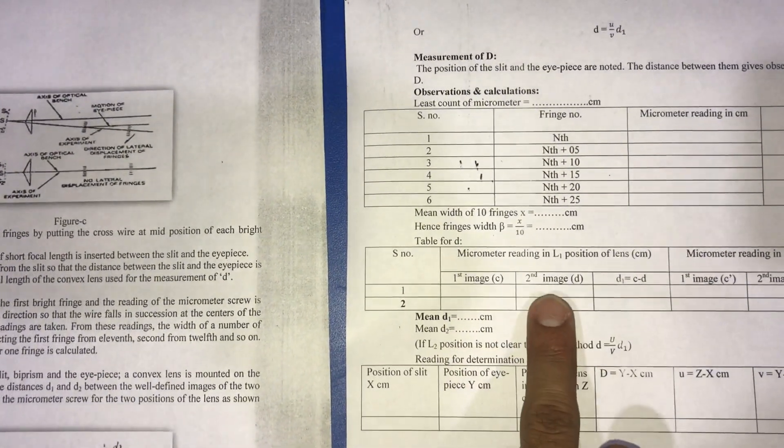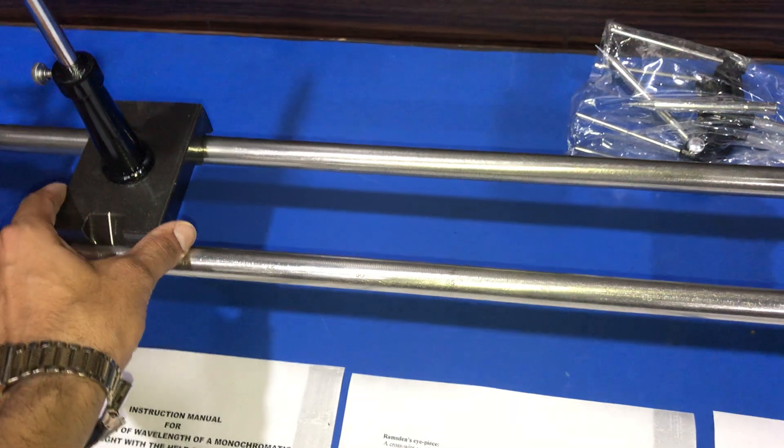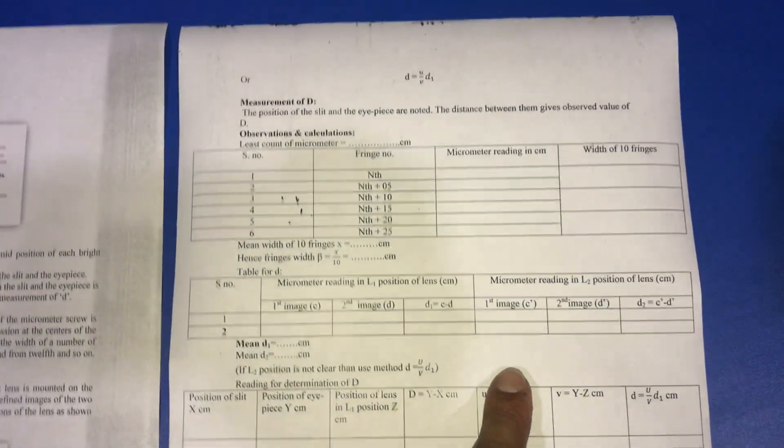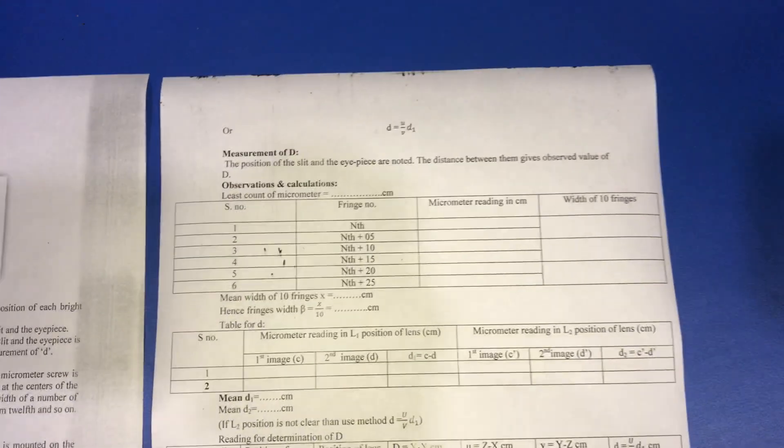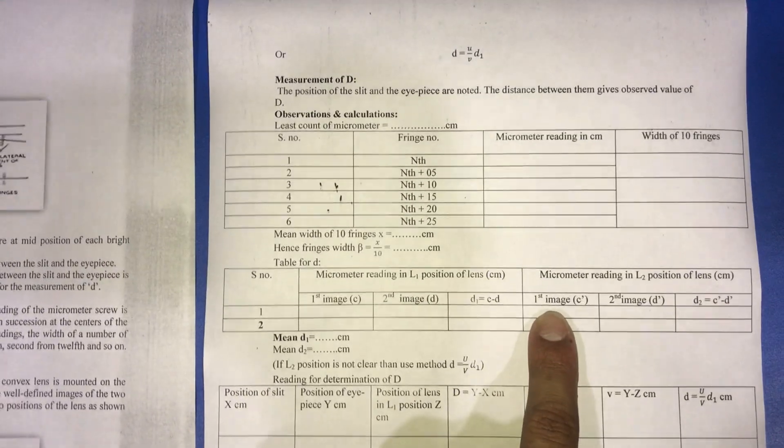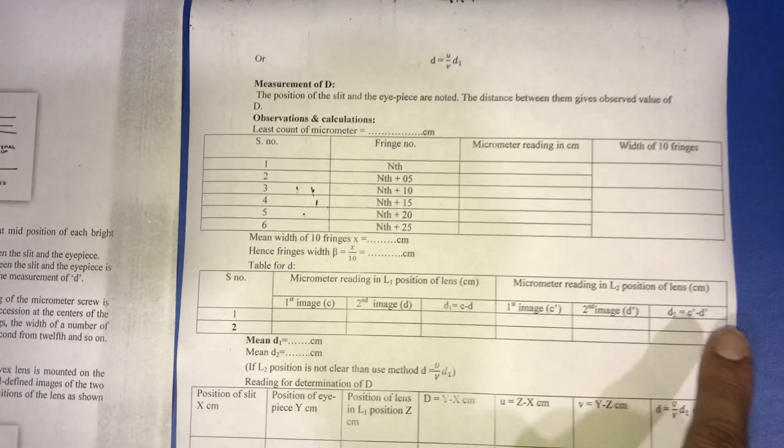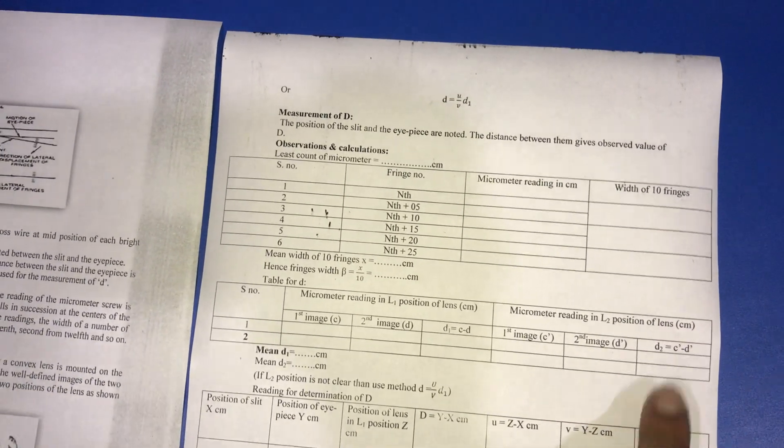We measure the first image and second image and calculate the distance between the two. Now we again change the position of the lens and again get two light sources very clearly, and calculate the value of distance d2 between the two lights, taking the micrometer reading for the first and second images.